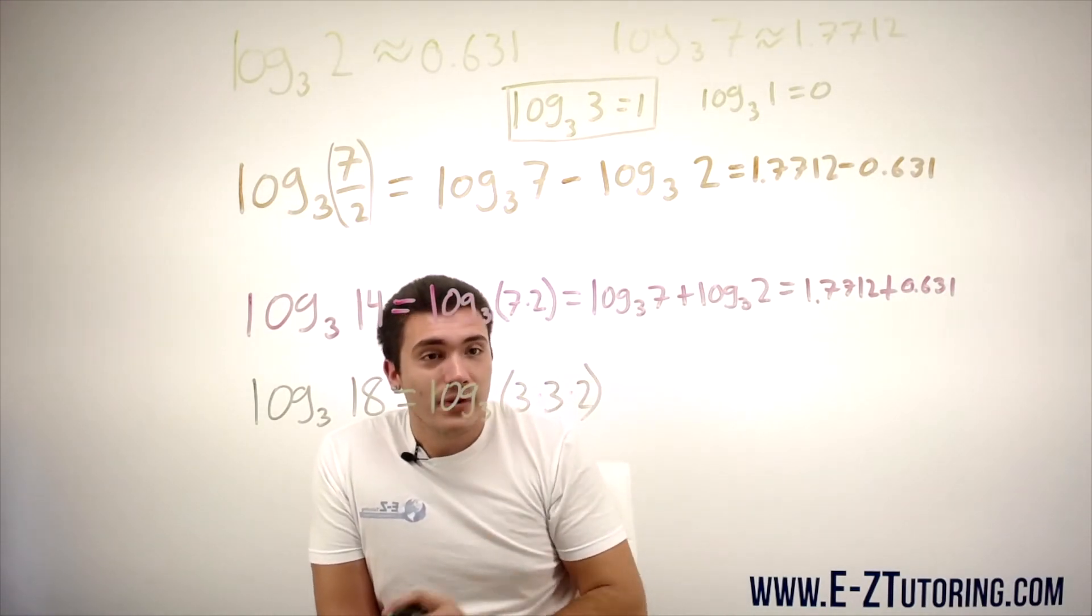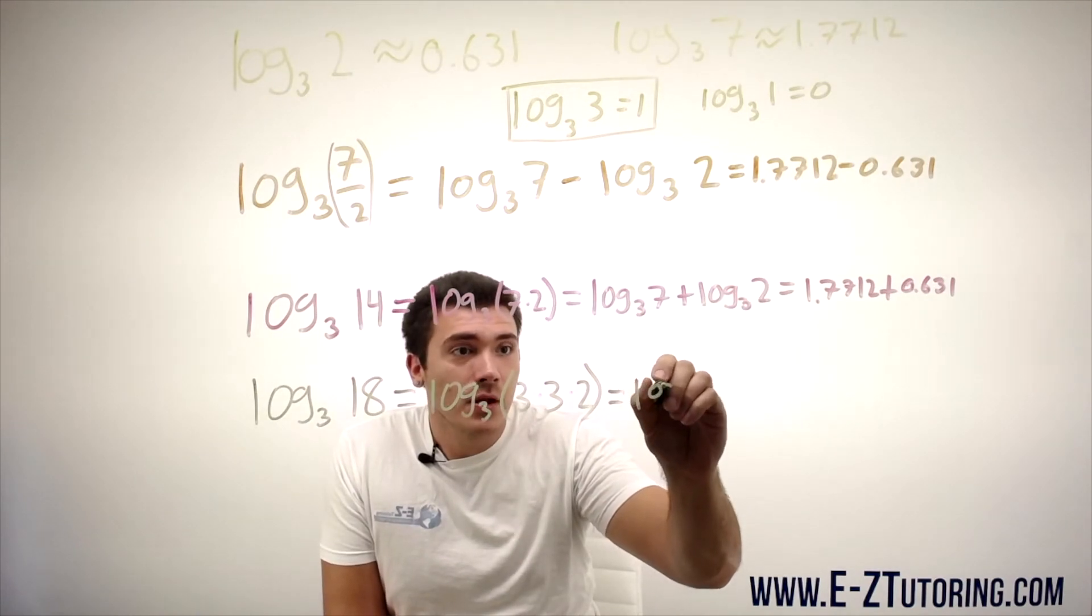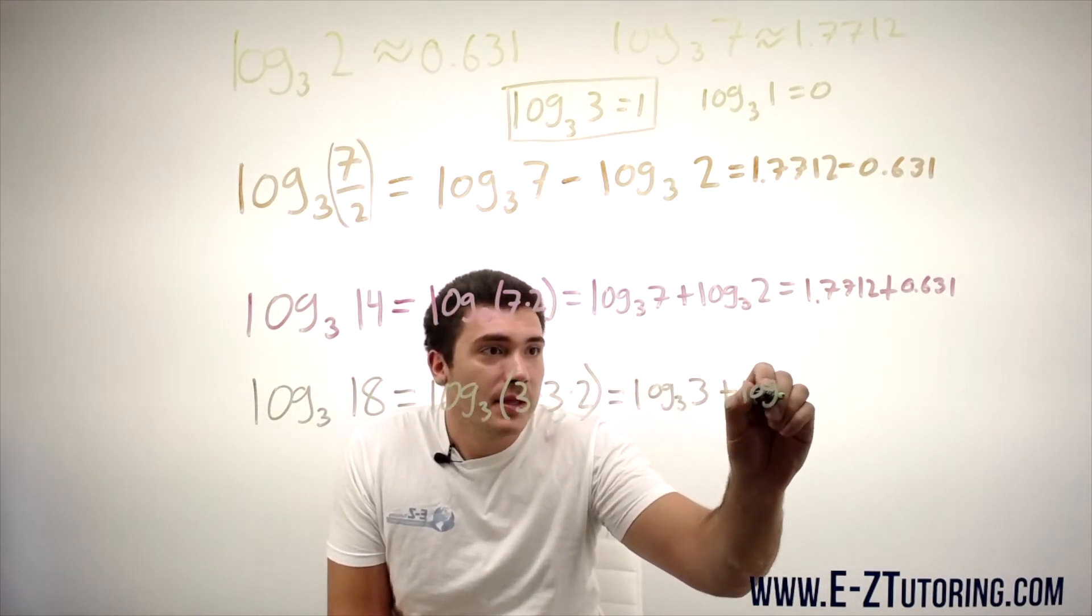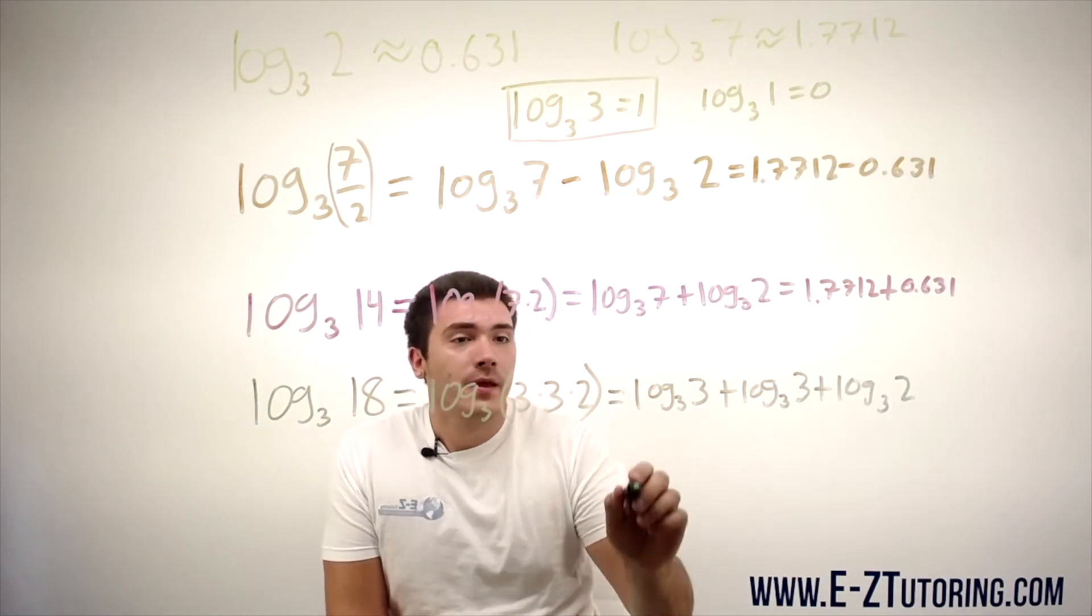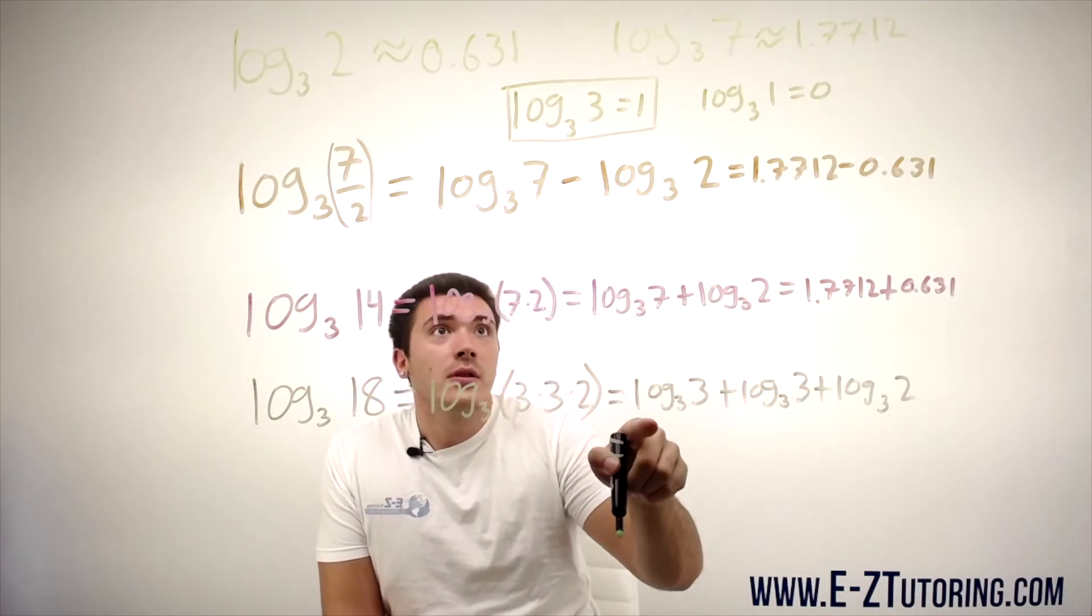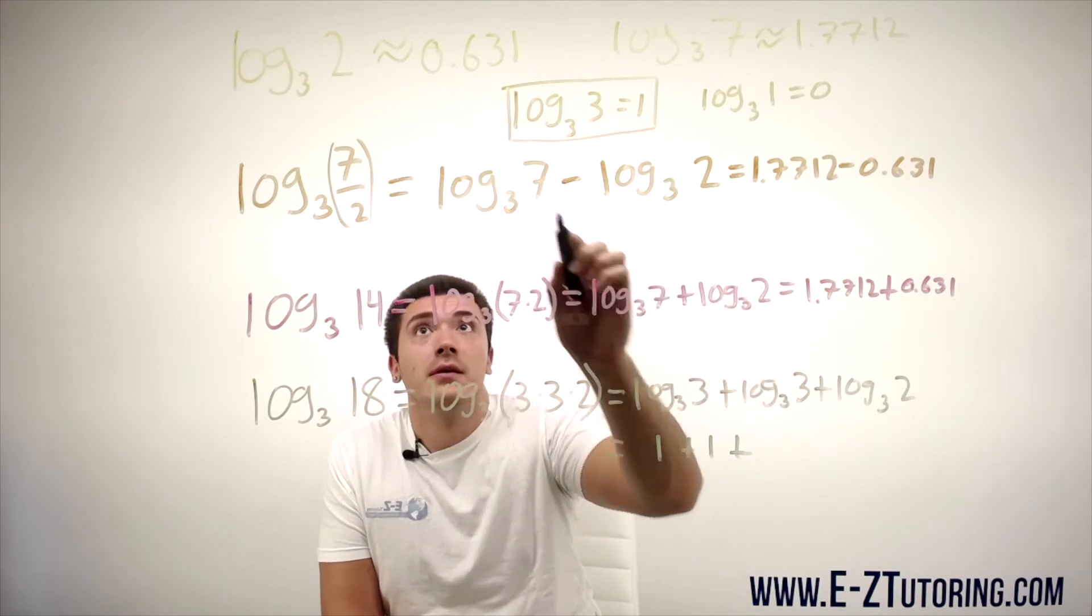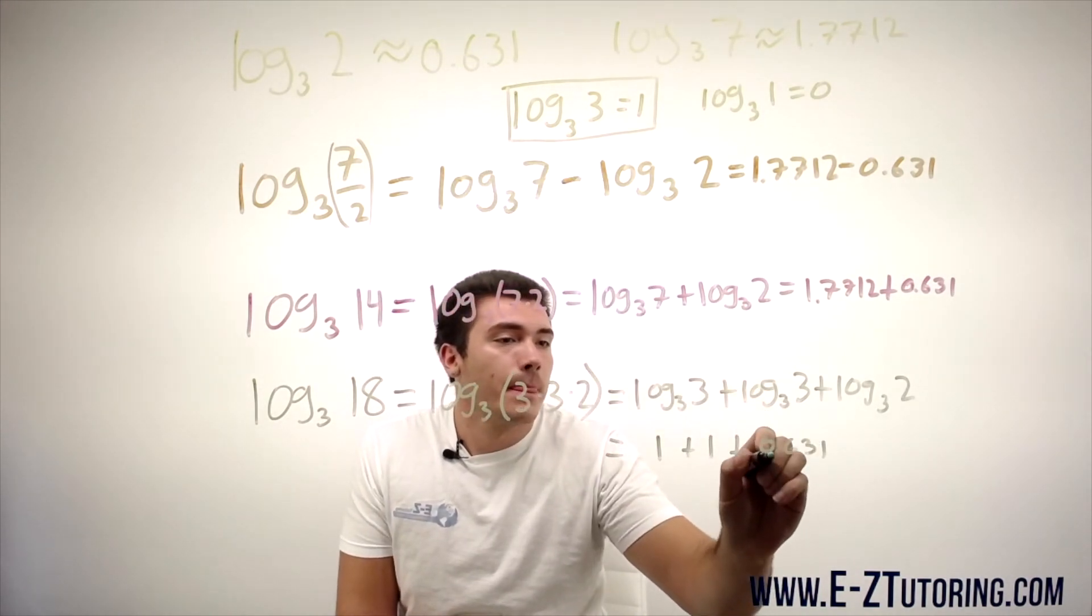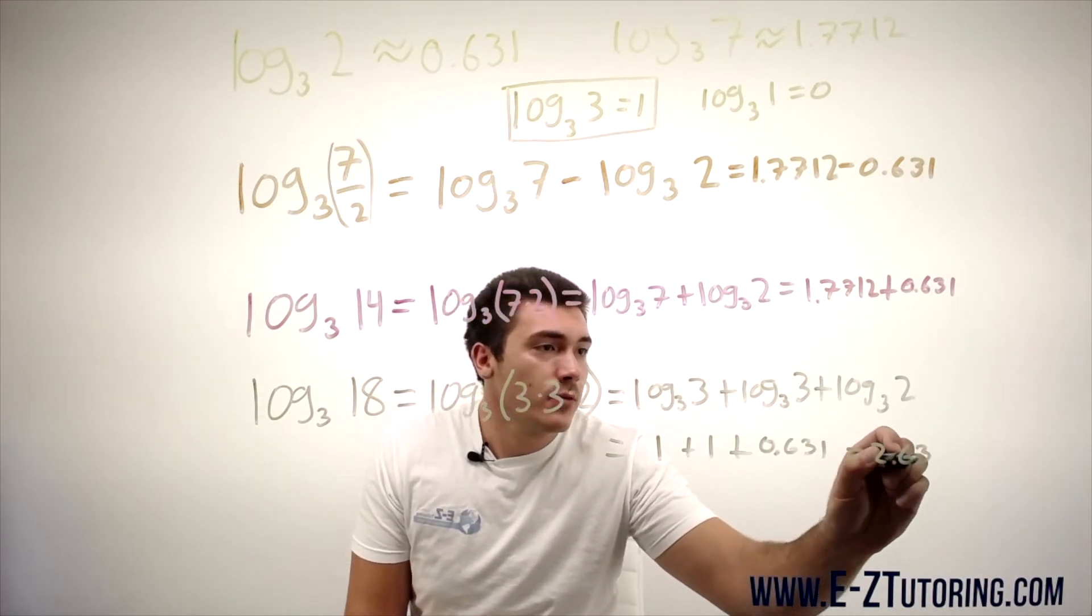So now we can use the rule of multiplication again and get log base 3 of 3 plus log base 3 of 3 plus log base 3 of 2. And then we substitute log base 3 of 3 is 1. So 1 plus 1 plus 0.631. And well, this one's easy to do. This is 2.631.